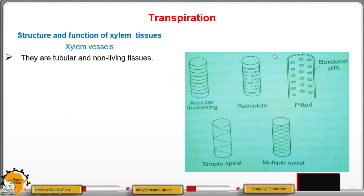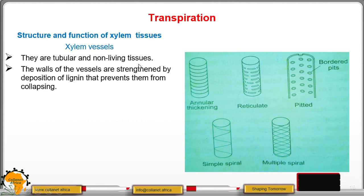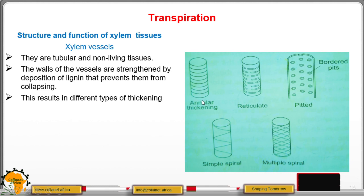Xylem vessels are tubular and are non-living tissues. The walls of the vessels are strengthened by deposition of a material called lignin, which prevents them from collapsing. This deposition of lignin occurs in various patterns, resulting in different types of thickening — annular thickening, reticulate thickening, pitted thickening with bordered pits, simple spiral thickening, and multiple spiral thickening.